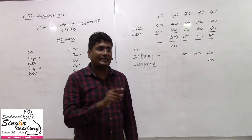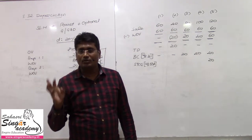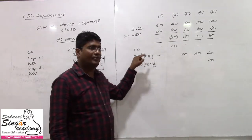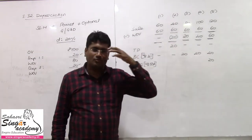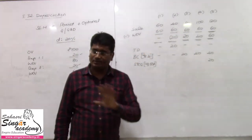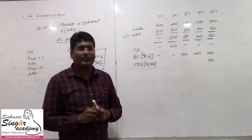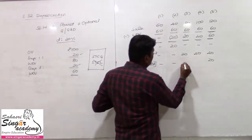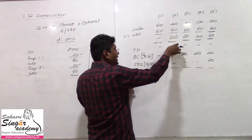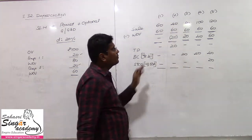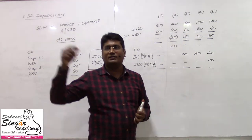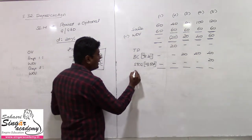Section 50 covers short-term capital gain or loss for depreciable assets in the block concept. Section 50 also applies for short-term capital gain in the case of assets eligible for depreciation under SLM in the case of the power sector unit. Of course, you don't need to memorize all those sections — no need to overload yourself. In all five situations: situation one — nothing; situation two — terminal depreciation; situation three — balancing charge; situation four — full balancing charge; situation five — balancing charge plus short-term capital gain.